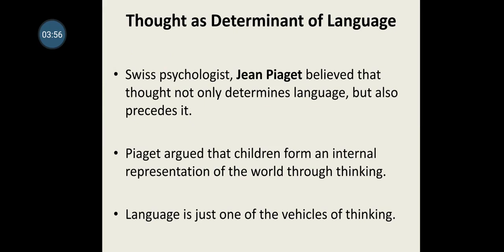Thought as a Determinant of Language. Swiss psychologist Piaget believed that thought not only determines language, but also precedes it. Unlike Whorf who said language determines thought, Piaget said thought comes first — it determines and then spreads into language. Thought is primary; language comes later.